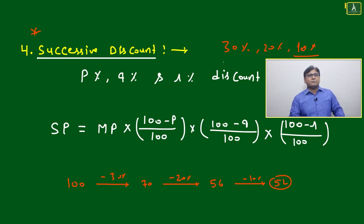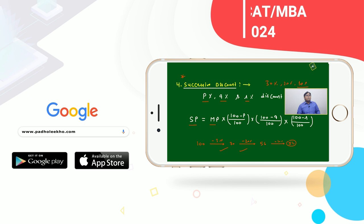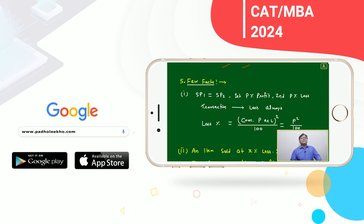How to calculate successive discount: p%, q%, r%. As shown in the figure, selling price equals marked price × (100-p)/100 × (100-q)/100 × (100-r)/100 - just consecutive percentage calculation.